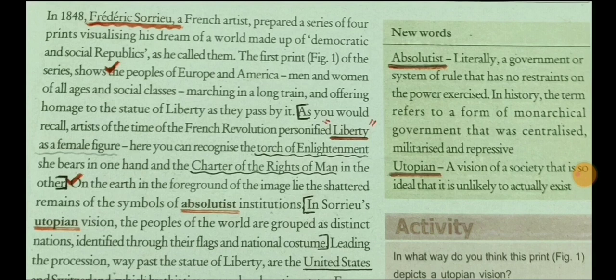Another important term here is 'utopian.' Its meaning is given in the box: a vision of a society that is so ideal that it is unlikely to actually exist. Basically, utopia means something perfect — and something so perfect it can't realistically be achieved. Frederick Sauryu's dream that he painted is a vision of a perfect, ideal society, and it is so ideal that it is hard to believe it can actually happen. Then we get to see how many of these countries did in fact become democratic and gain liberty — things we have come across in standard nine.